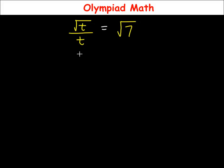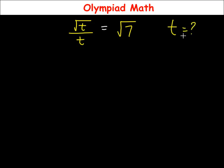Hello everyone, welcome. In this video, let us solve this equation. We have √t over t is equal to √7, and here we have to solve for the value of t. So t is the unknown we are looking for.